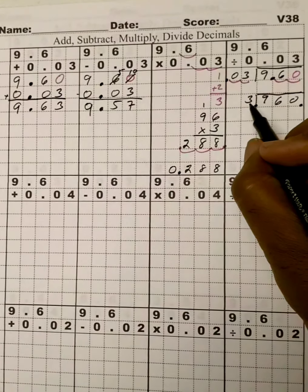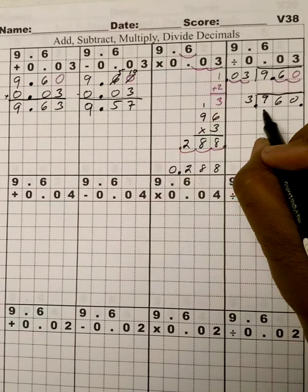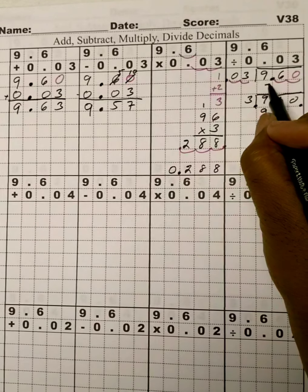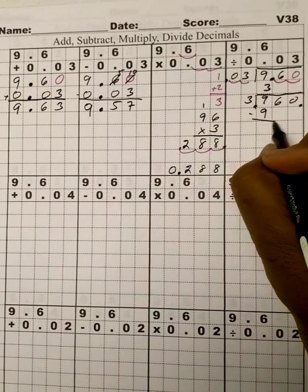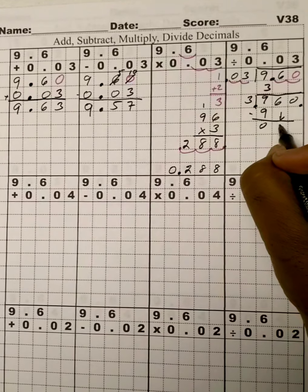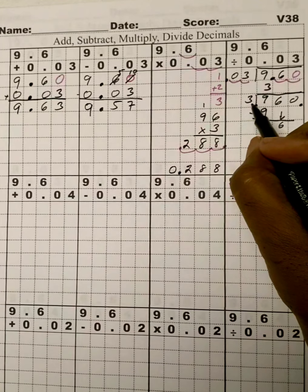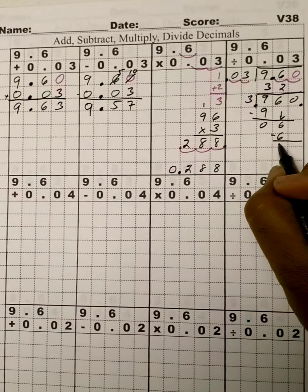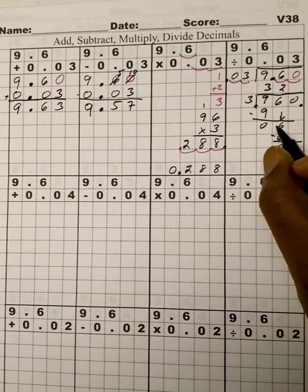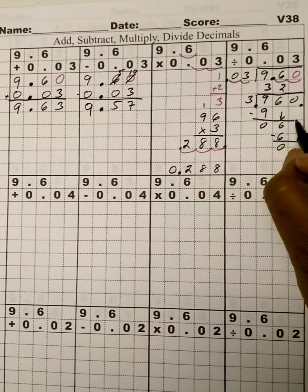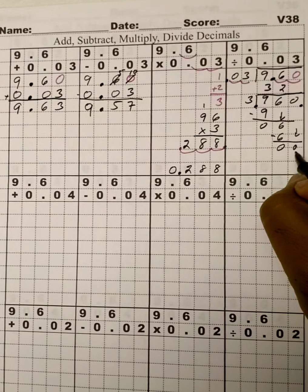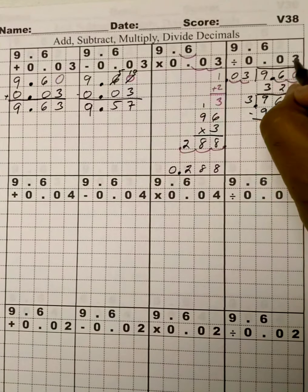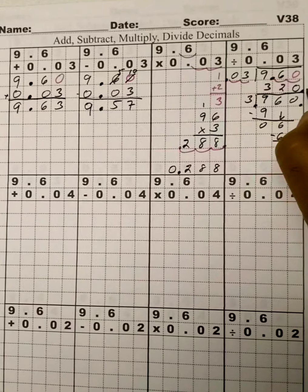Okay. So, 3 goes into 9, 3 times. As I say, 9 is the closest thing. And the multiplier is 3. Subtract, we get 0. Bring down our 6. Closest thing to 3 and 6 is 6. And the multiplier is 2. And we get 0. And then we bring down another 0. The closest thing to 3, to 0, on the 3-time table, is actually 0 itself.